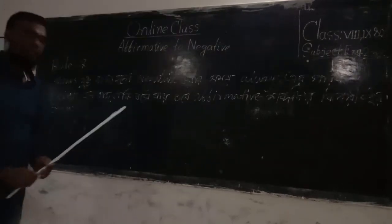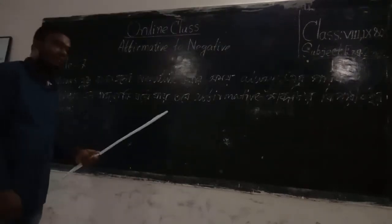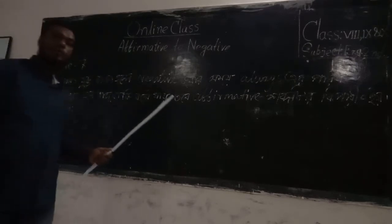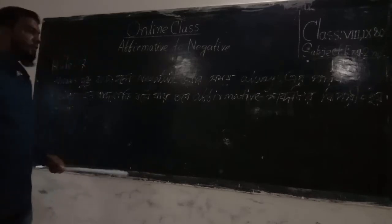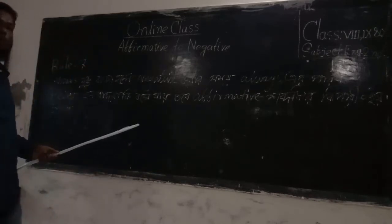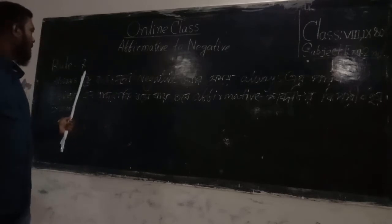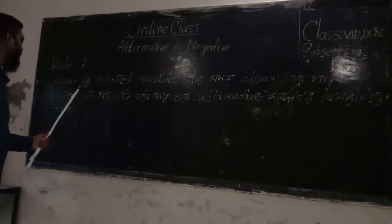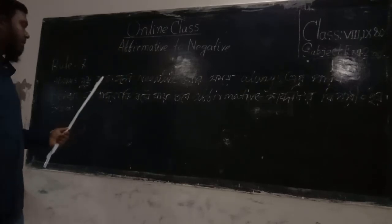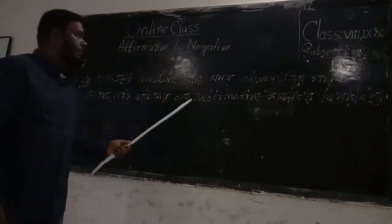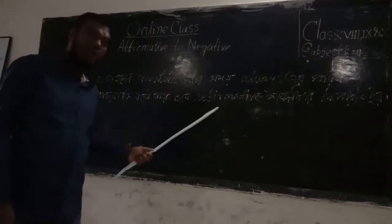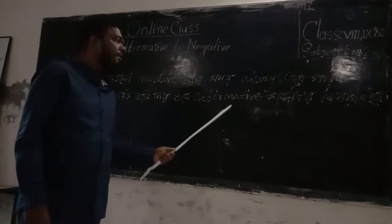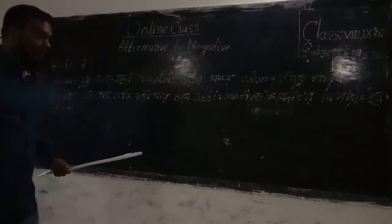Now rule number seven. If we find the word 'always' in the sentence, then when you convert the sentence from affirmative to negative, instead of 'always' you have to use 'never.' You also have to use the antonym of the affirmative word when converting to negative.